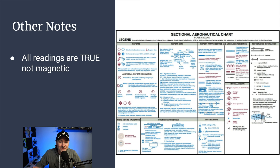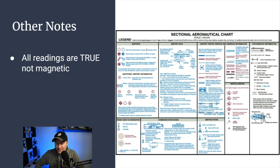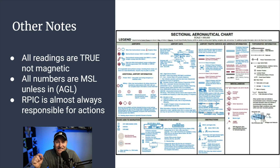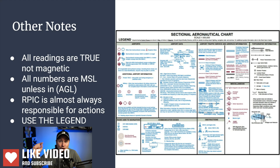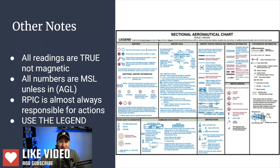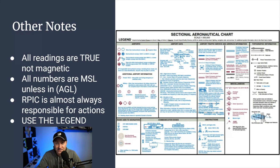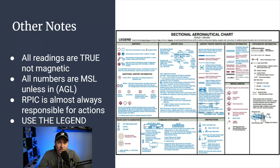Other things to note: all readings are true, not magnetic — that might be a question. All numbers on your charts are MSL, not AGL, unless they're in parentheses — if you see parentheses, that's an AGL number. The remote pilot in command is almost always the answer to a responsibility question; there should be about three or four questions about that and it should be a gimme. And I cannot say this enough — use the legend. There's a section on airspace, airports, airport data, and obstructions. Find it in the packet they give you; this is your reference point and it can be so helpful when you're taking the test.